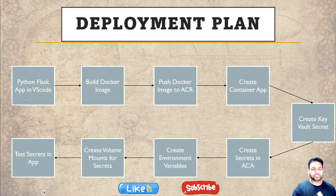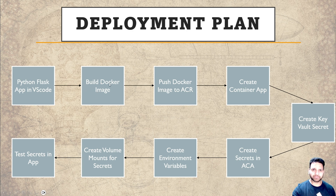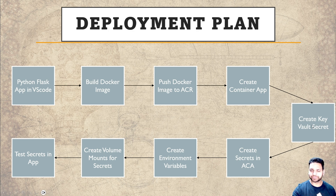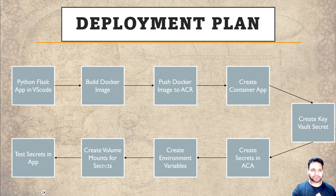Let's start with the deployment plan. First I'm going to create a Python Flask web application in VS Code. Once that's done I'll use Docker to build the Docker image and push it into ACR (Azure Container Registry). In the Flask application I'm going to use secrets provided via environment variables. Once the repository is created, we'll create the Azure Container App using that image, then create an Azure Key Vault and create a secret in it. One secret will be in Azure Key Vault and another directly in Azure Container Apps. Both secrets will be referenced using environment variables, and I'll also create volume mounts in the container for the secrets, then test all secrets in our application.